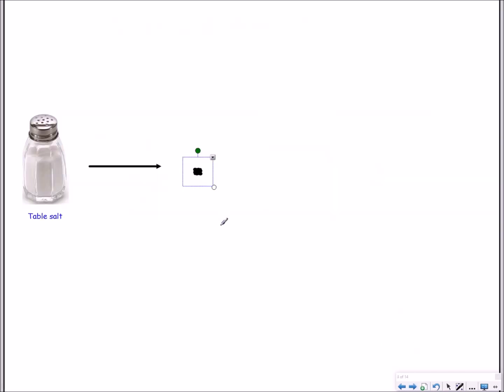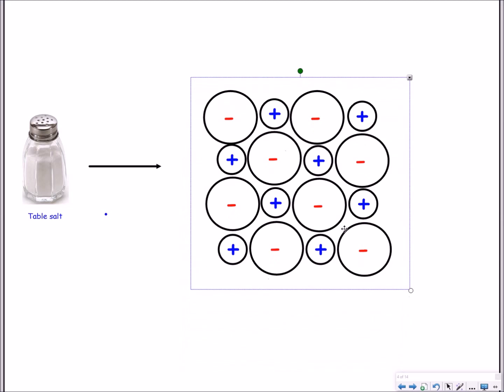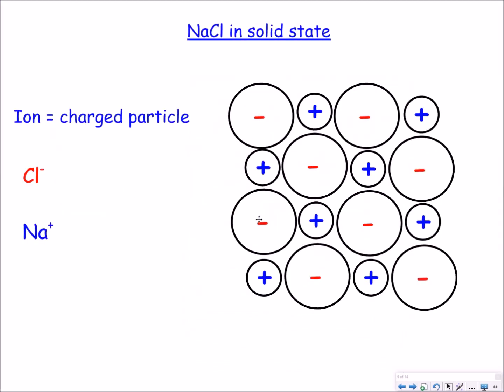Now if I was to zoom into the structure of table salt I would see something that looks like this. So we have positively charged sodium atoms attracting to negatively charged chloride ions. We call this electrostatic attraction also known as ionic bonding.